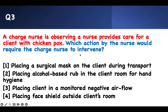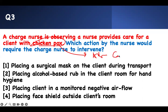Number two: a charge nurse is observing a nurse provide care for a client with chickenpox — varicella. Which action by the nurse should require the charge nurse to intervene? That means which action requires follow-up. The key concept: varicella requires both airborne and contact precautions. Every action must satisfy both airborne and contact requirements.